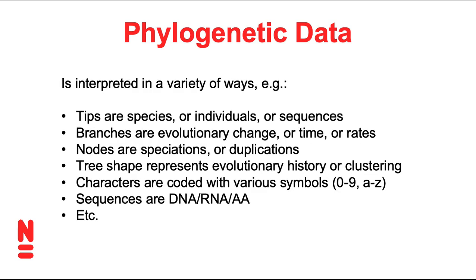Phylogenetic data can be interpreted in wildly different ways depending on the context. For example, a dataset that has a tree — what do the tips actually mean? Are they species, so it's a species tree? Are they individuals sampled from one or more populations? Or are the tips simply the sequences in a multiple sequence alignment? Likewise, what do the branches actually mean? Are the branch lengths evolutionary change, or evolutionary time, or something else? In some situations, the lengths of branches indicate the rate of change, so a long branch means a rapid rate of evolution and a short branch means a slow rate.